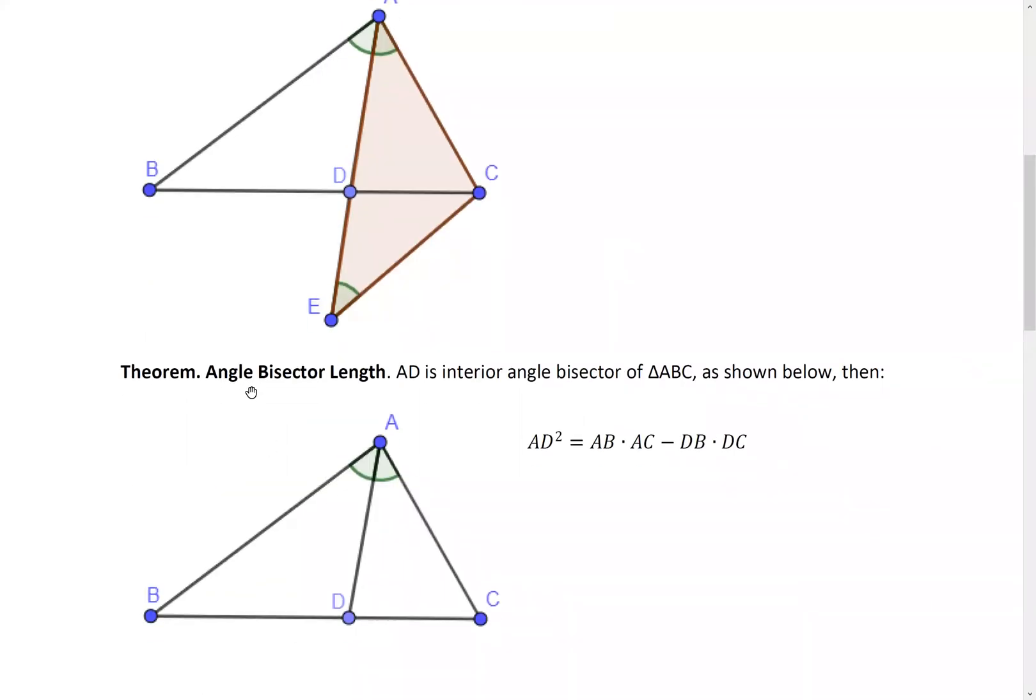Let's put it this way. Angle bisector length. So in a triangle, angle bisector is drawn. D is on the side of BC. Then we immediately have this result.